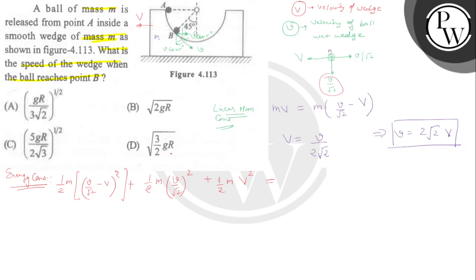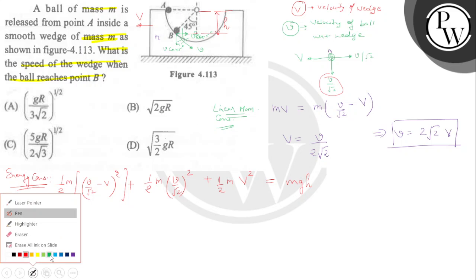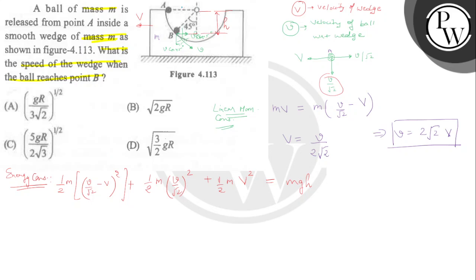This equals the drop in potential energy, which is mgh. We need to calculate h. The radius r is given, so we can find h from the geometry.